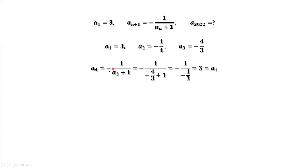a4 equals negative 1 over a3 plus 1. Substituting a3 equals negative 4 over 3 and simplifying, we have a4 equals 3. What is 3? 3 is the same as a1.